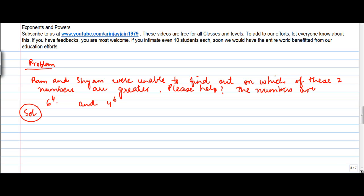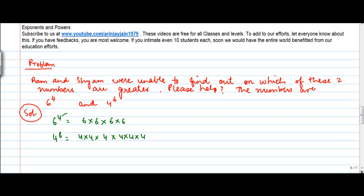Now, whatever we've learnt in the previous videos, we know that 6 to the power 4 means 6 multiplied by itself 4 times — the exponent is 4, the base is 6. And 4 to the power 6 means 4 multiplied by itself 6 times.